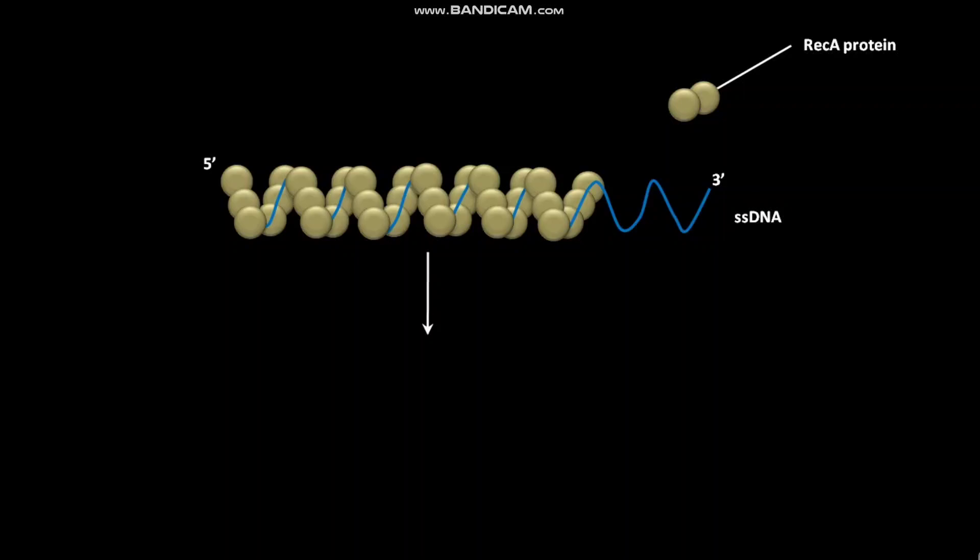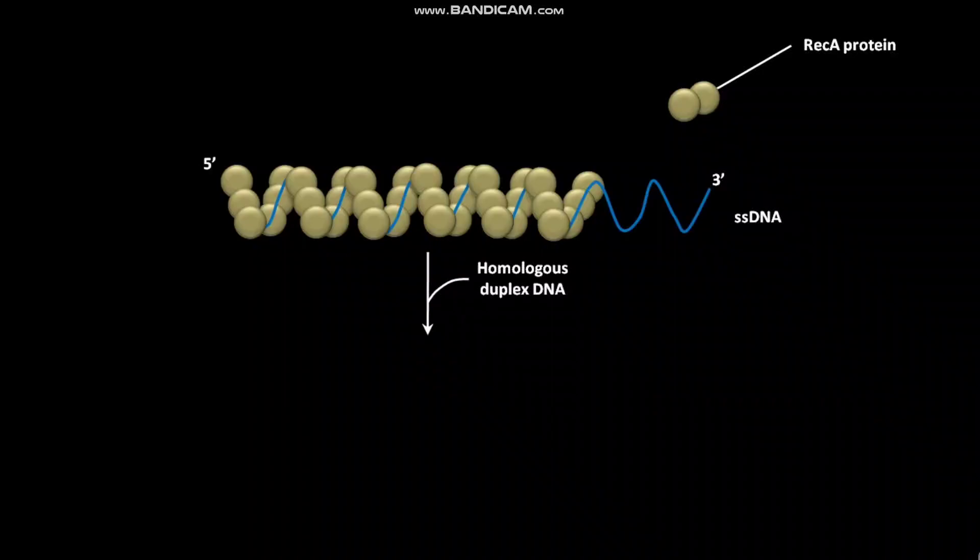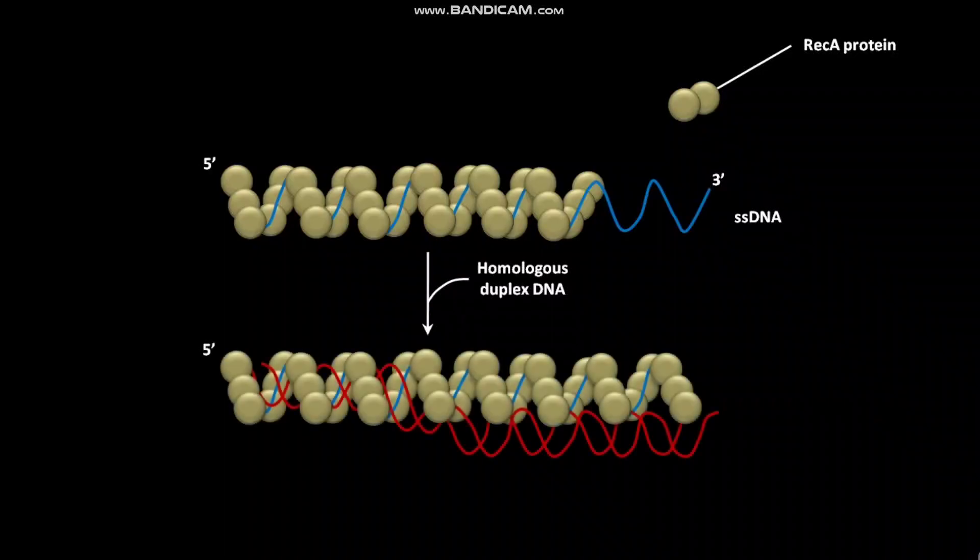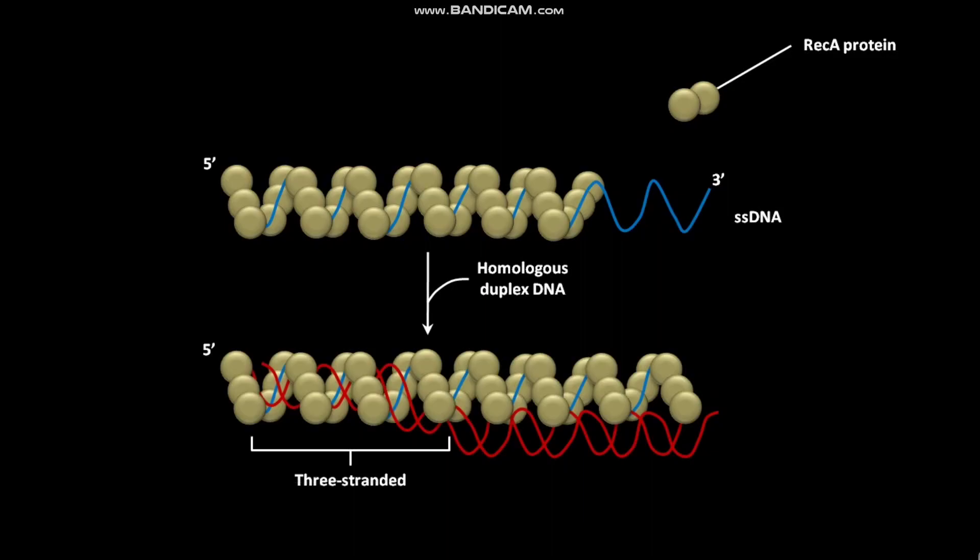In the next step, a homologous duplex DNA incorporates into this complex. Due to this incorporation, a three-stranded pairing intermediate is formed. This is the incorporated homologous duplex DNA.